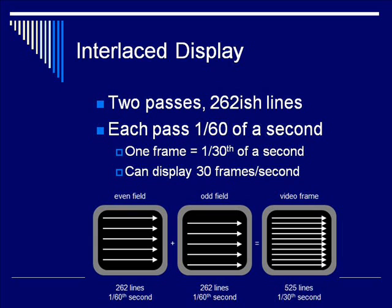So we've made two passes across the screen, each of around 262 lines, each pass 1/60th of a second long. In that time, we've displayed one frame on the screen. Since we've done two passes of 1/60th of a second, we've displayed one frame in 1/30th of a second. So on a regular TV, we can display 30 frames per second.